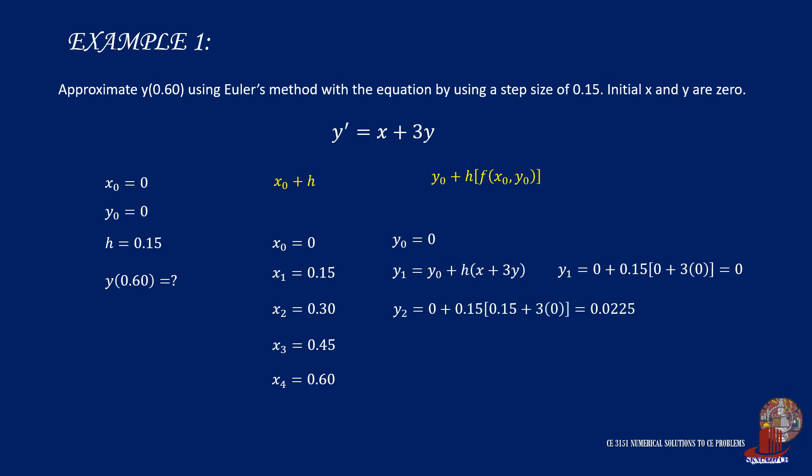y2 uses the same formula with previous values: y2 equals y1 of 0 plus h of 0.15 times x1 of 0.15 plus 3 times y1, which is 0. This gives y2 as 0.0225.